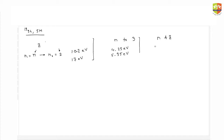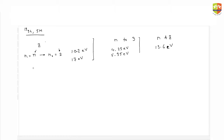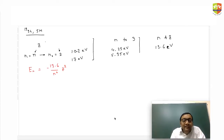Just write down two equations and you'll get it. What is given is ionization energy for hydrogen atom is 13.6 eV. Energy in the nth orbit for a hydrogen-like atom is 13.6 z² / n². The value of n should be more than 3 because it talks about jumping to n equal to 3.